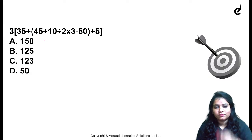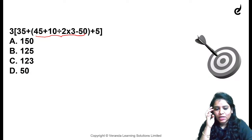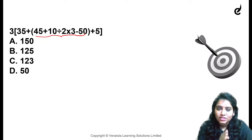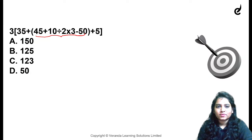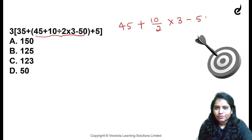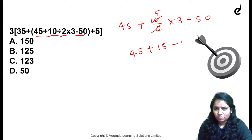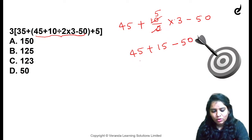OK, next equation — complete the y-part. Solve: here, 10 by 2, OK, 45 plus 10 by 2 into 3 minus 50. That gives 45 plus 15 minus 50, which is minus 5. Option D.